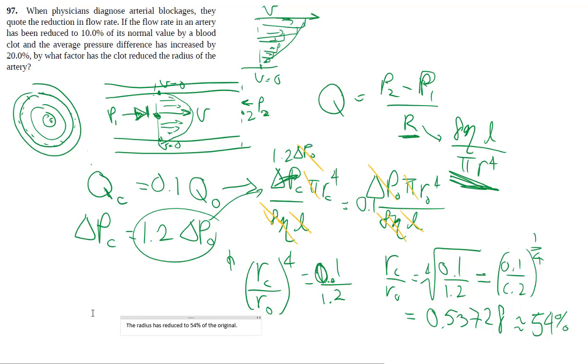Which is a significant thing, right? Even if you're only reducing it to 54%, the flow rate is all the way down to 10% because of the fourth power that we're dealing with here.